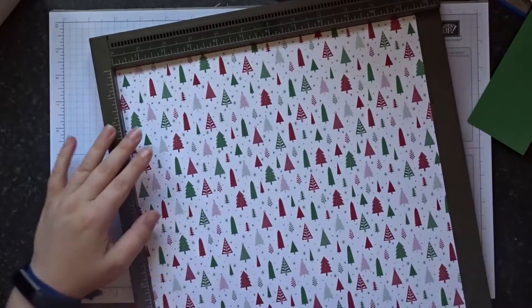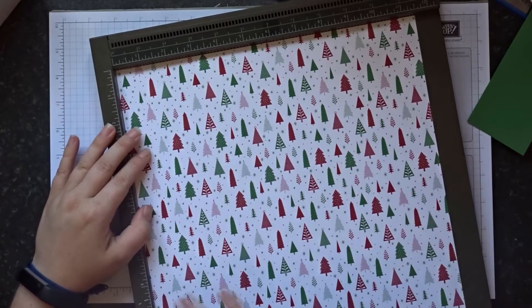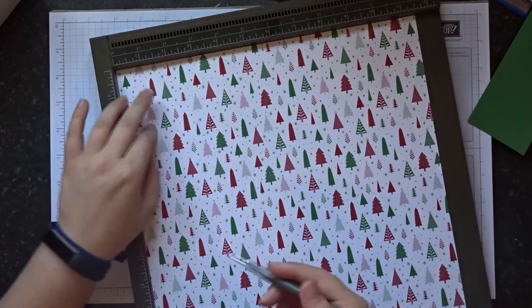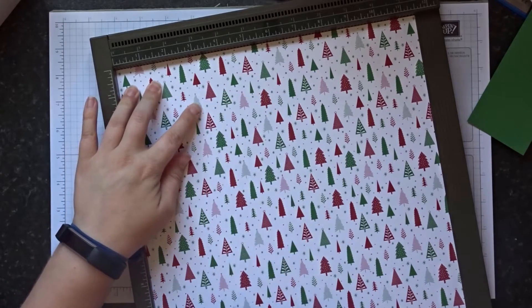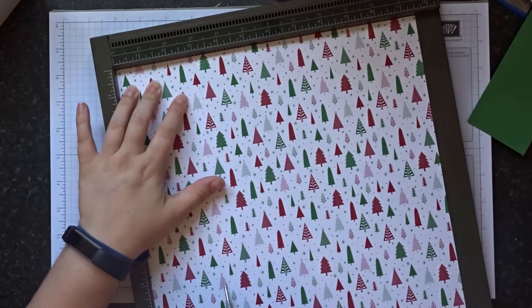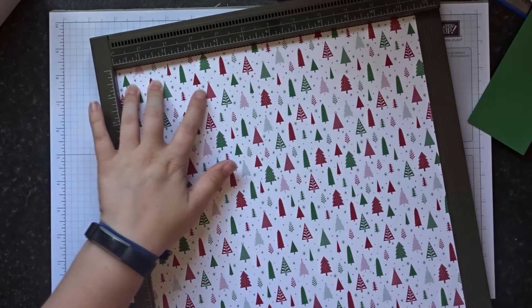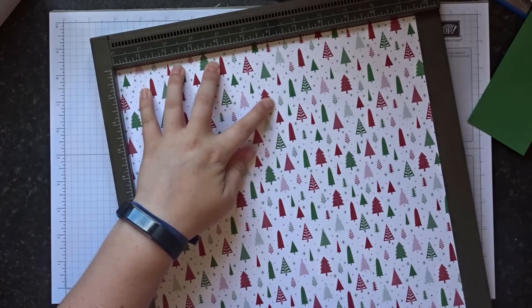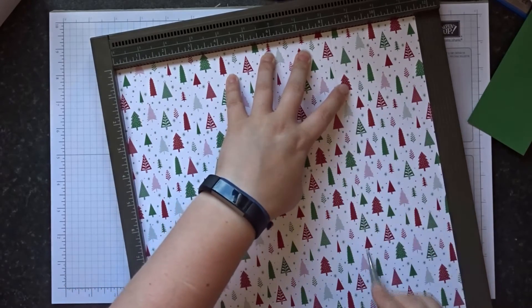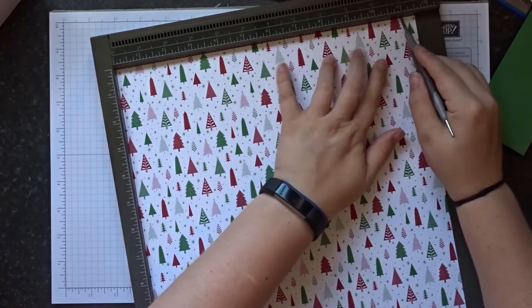So we're going to start with our DSP. On the short side we're going to score at two and three quarter inches, two and three quarter inches, five and a half inches, eight and a quarter inches, and 11 and three quarter inches.